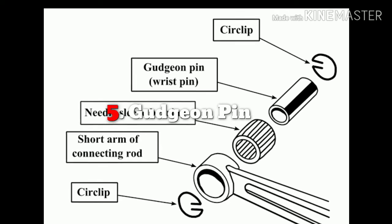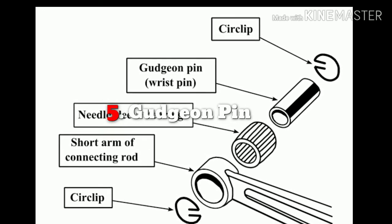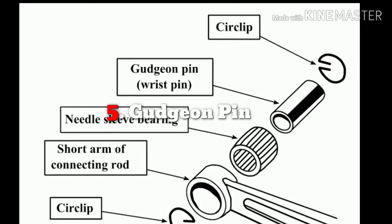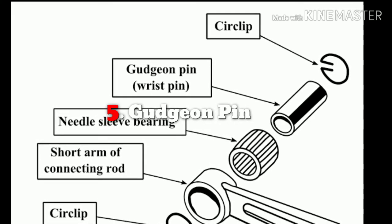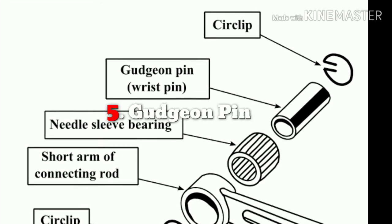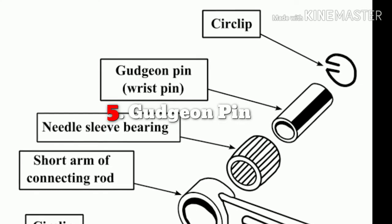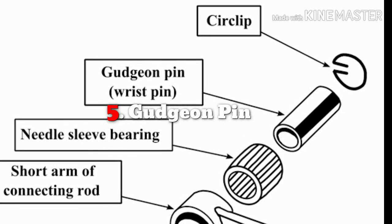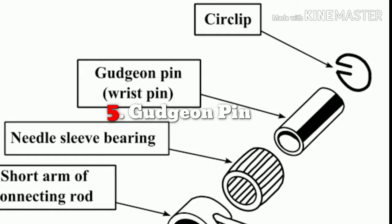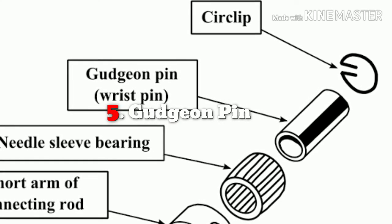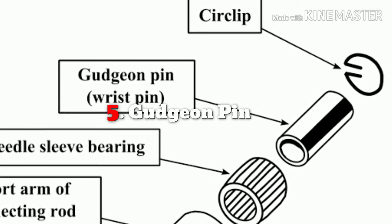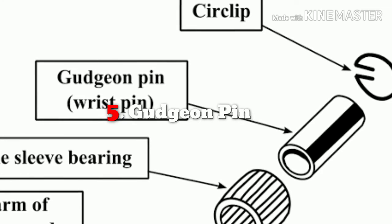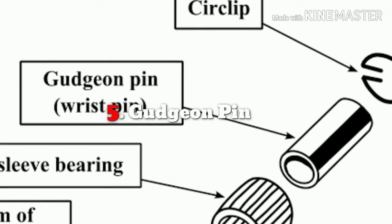The next part is the gudgeon pin. In internal combustion engines, the gudgeon pin connects the piston to the connecting rod and provides a bearing for the connecting rod to pivot upon as the piston moves. In early engine designs, including those driven by steam, the gudgeon pin is located in a sliding crosshead that connects to the piston rod. The gudgeon pin is typically a short hollow rod forged from a high-strength steel alloy, and may physically be separate from both the connecting rod and the piston or crosshead.